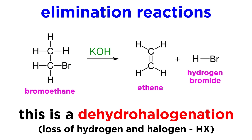This will generally occur in the presence of very strong base, like potassium hydroxide. The hydroxide ion will take this proton, and the electrons in the carbon-hydrogen bond will go to form the pi bond, while the electrons in the carbon-halogen bond will leave with the halogen to form a halide ion. Water will be a byproduct.